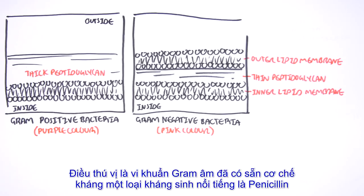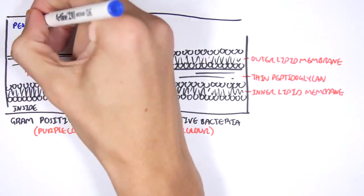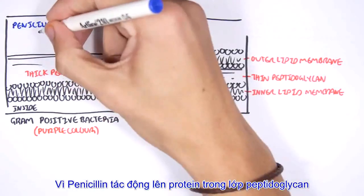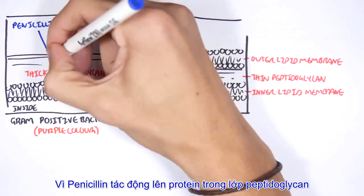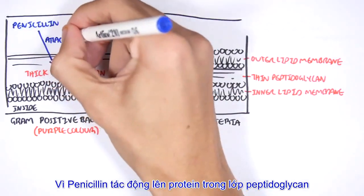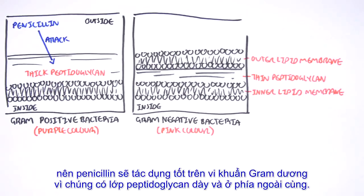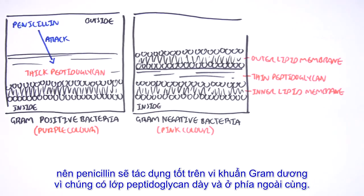What's interesting is that gram-negative bacteria already have some form of resistance to a famous antibiotic called penicillin. Penicillin targets proteins within the peptidoglycan layer. Therefore, penicillin would be very effective against gram-positive bacteria because the peptidoglycan layer is thick and it's the outermost layer.